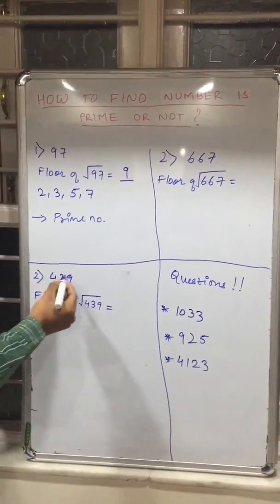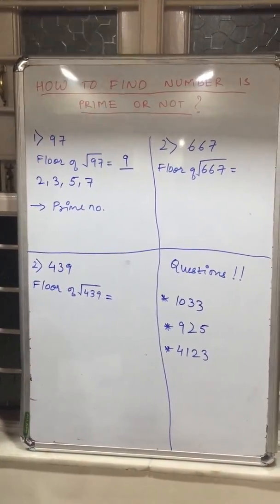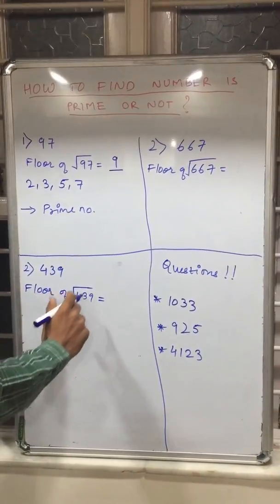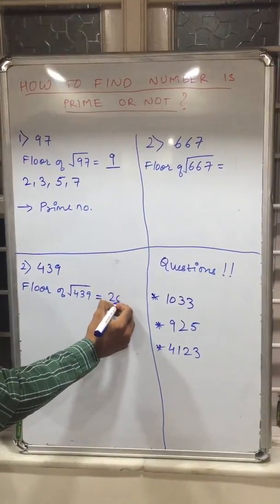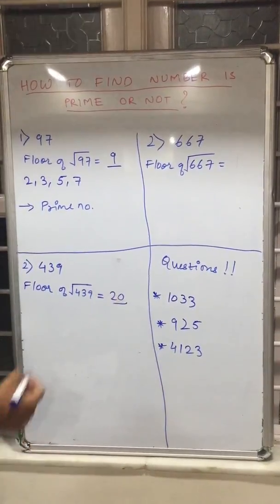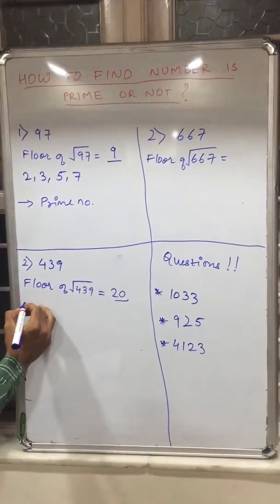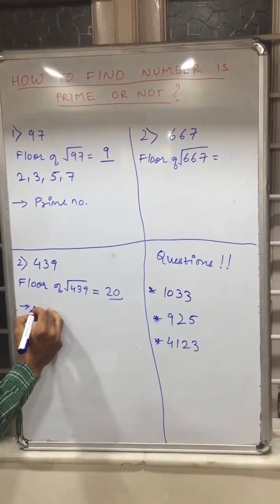Now let's move on to 439. So now what is the floor of root 439? It will be 20. So just as the before process, you have to just write all the prime numbers before 20.